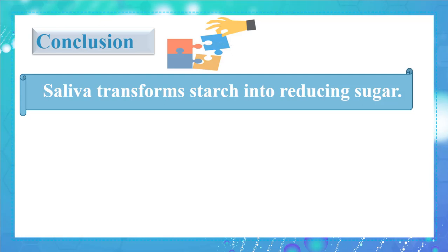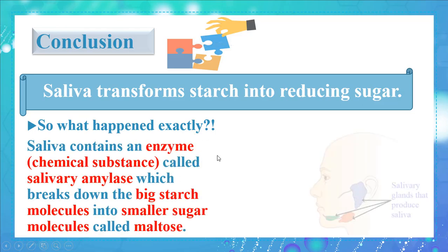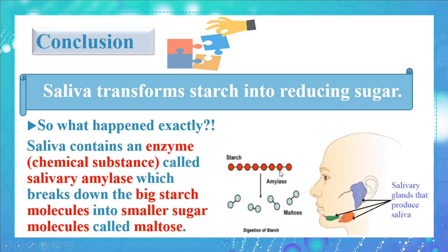After interpreting both experiments, only in tube A where saliva is present was there an absence of starch and an appearance of sugar. Therefore, saliva transforms starch into reducing sugar. Saliva contains an enzyme called salivary amylase, which breaks down the big starch molecules into smaller sugar molecules called maltose.